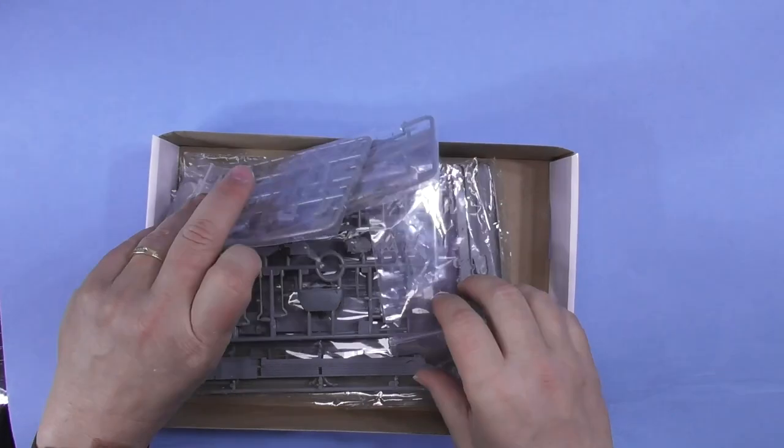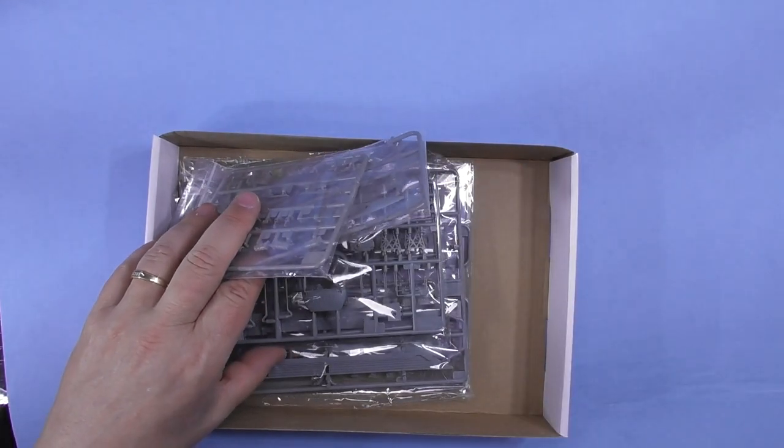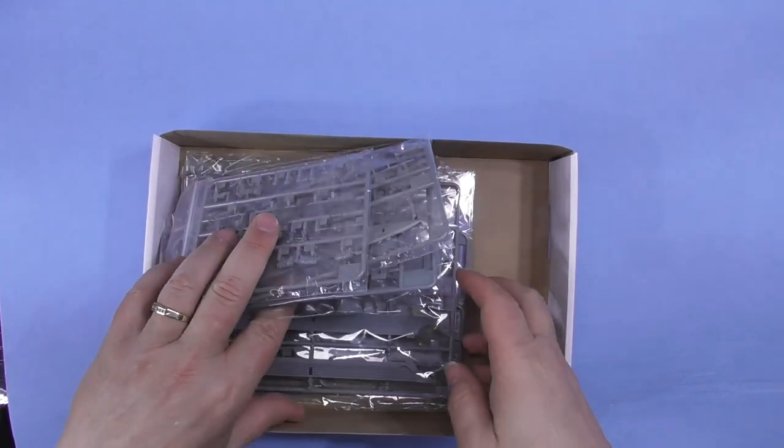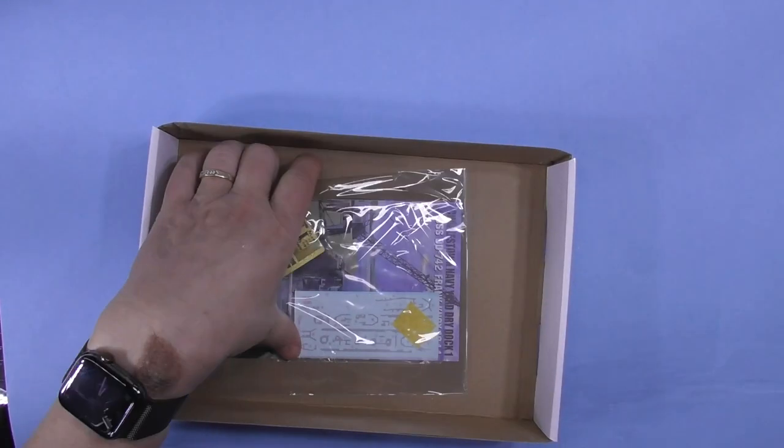Alright, we've got one, two, three, four. Wow, this ship is smaller than that other one. One, six, seven, eight, nine. Nine sprues, some PE, some decals, some instructions.